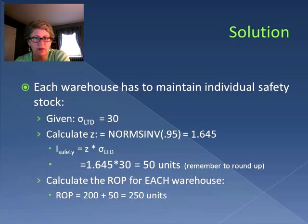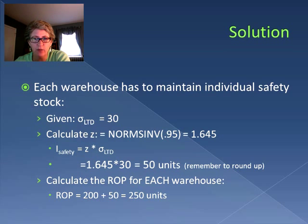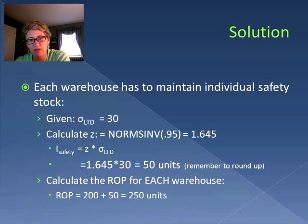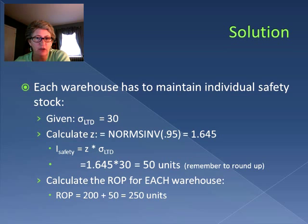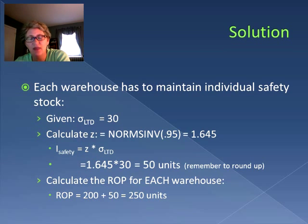Beginning with one warehouse, we have our standard deviation of lead time demand of 30. We calculate our z-statistic associated with the 95% service level, which gives us 1.645. We multiply it by the standard deviation of 30, and we get a safety stock of 50 units — remember, we round up. Then for the reorder point for that warehouse: the lead time demand was 200, we add in our 50 units for safety, so when we get down to 250 units in inventory, that's when we place our order.